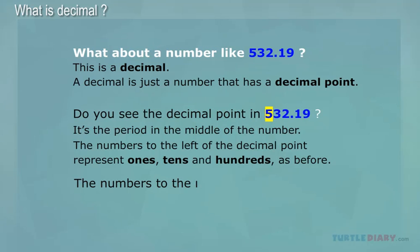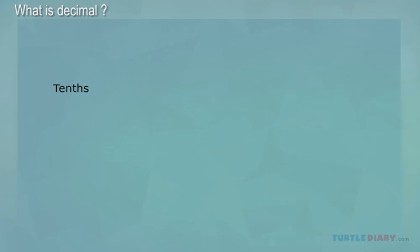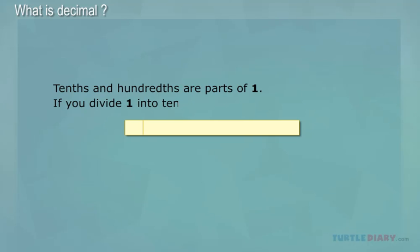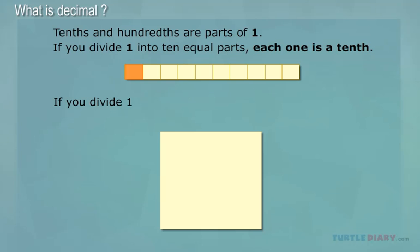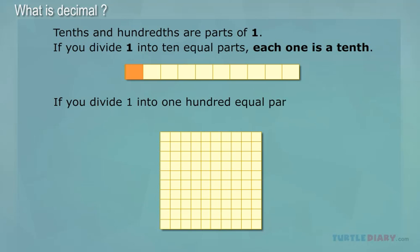The numbers to the right of the decimal point are tenths and hundredths. Tenths and hundredths are parts of 1. If you divide 1 into 10 equal parts, each one is a tenth, and so on.